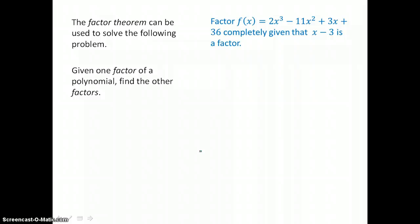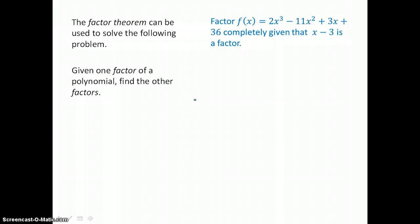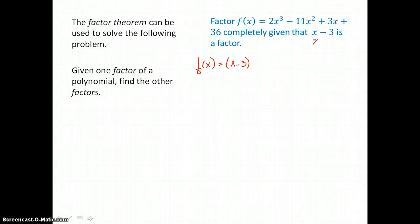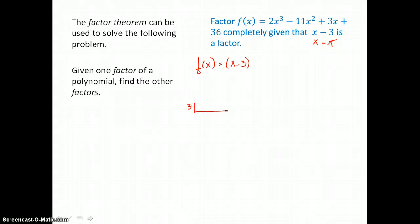We can use synthetic division to solve problems like this: factor f(x) = 2x cubed minus 11x squared plus 3x plus 36 completely, given that x minus 3 is a factor. We already know one factor is x minus 3, so we take the k value of 3 and divide the cubic by this factor synthetically.